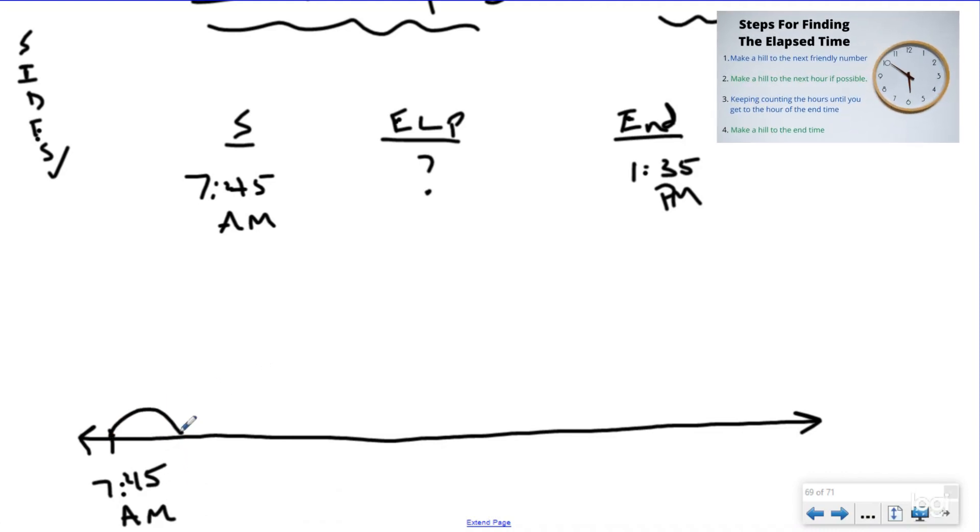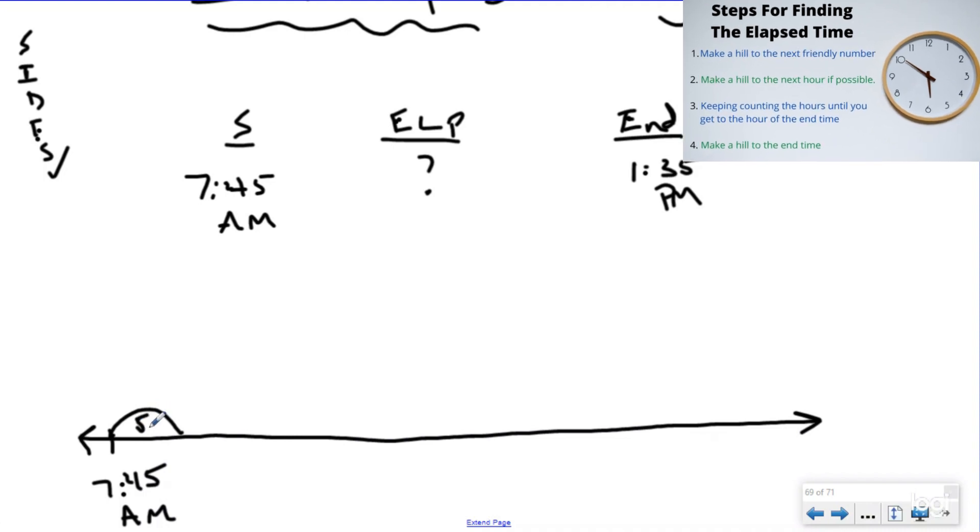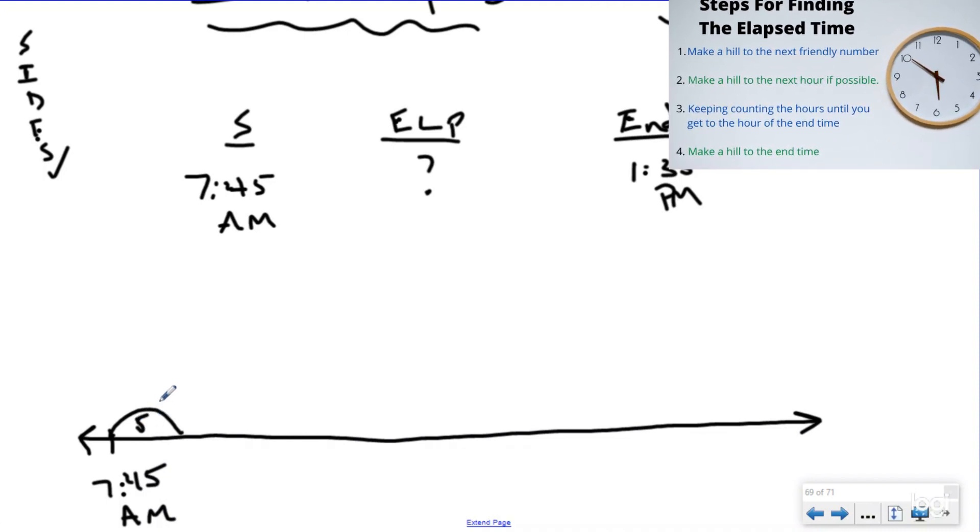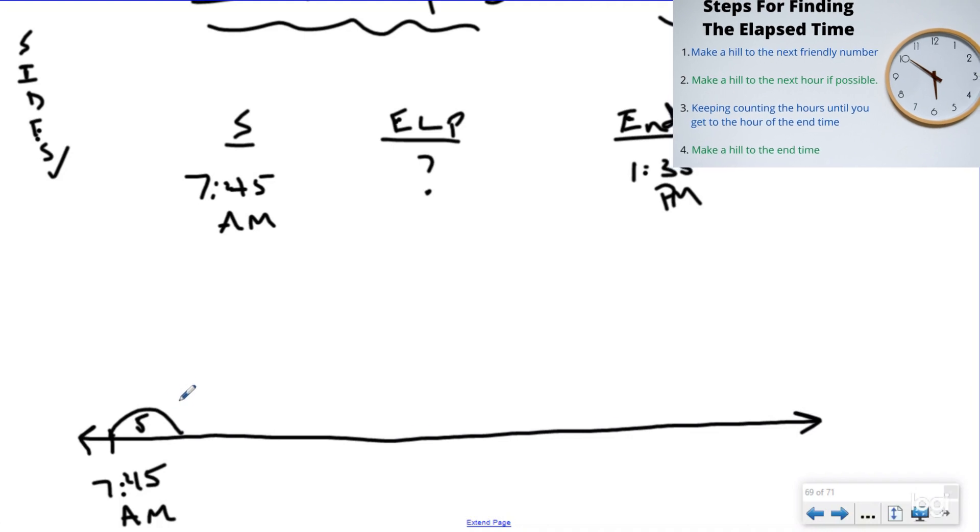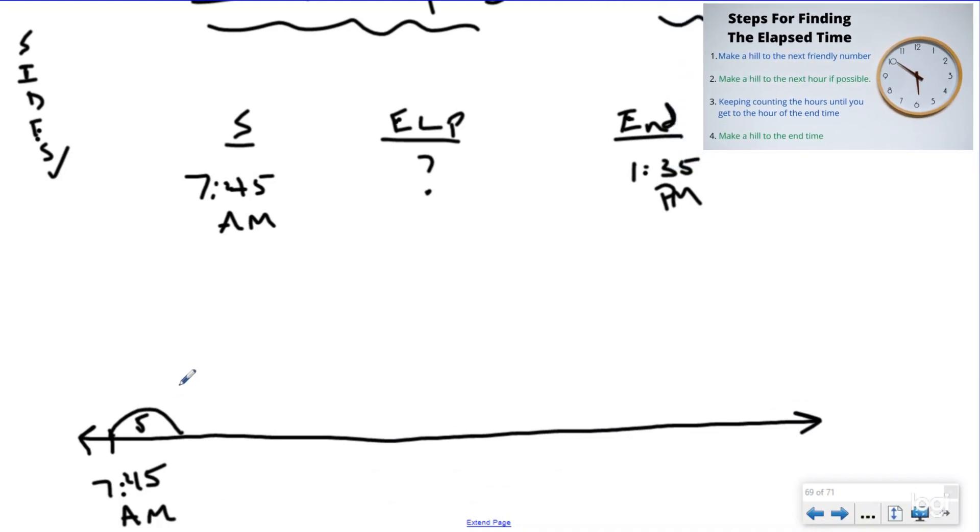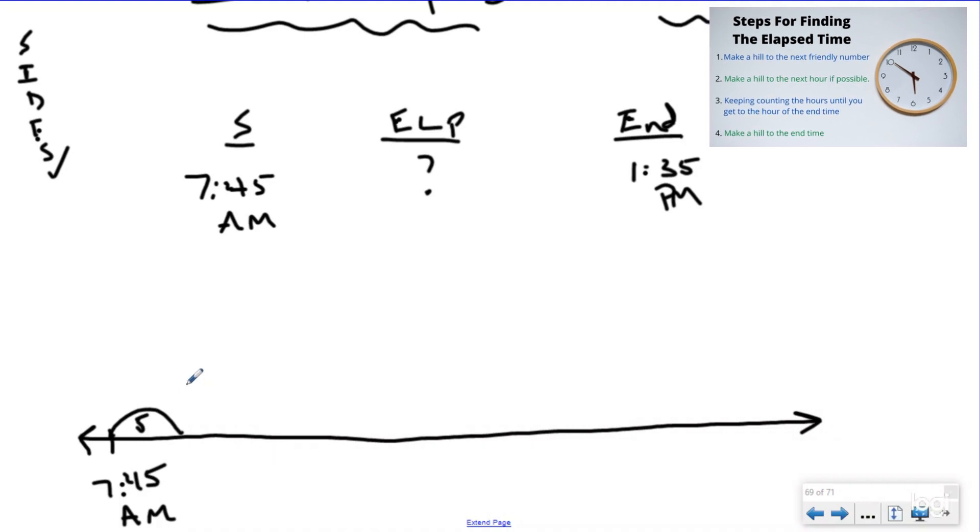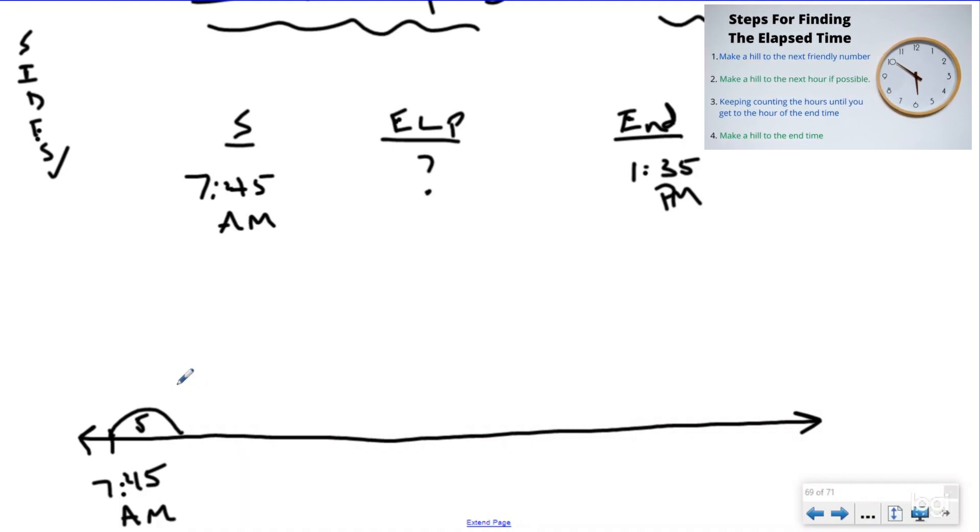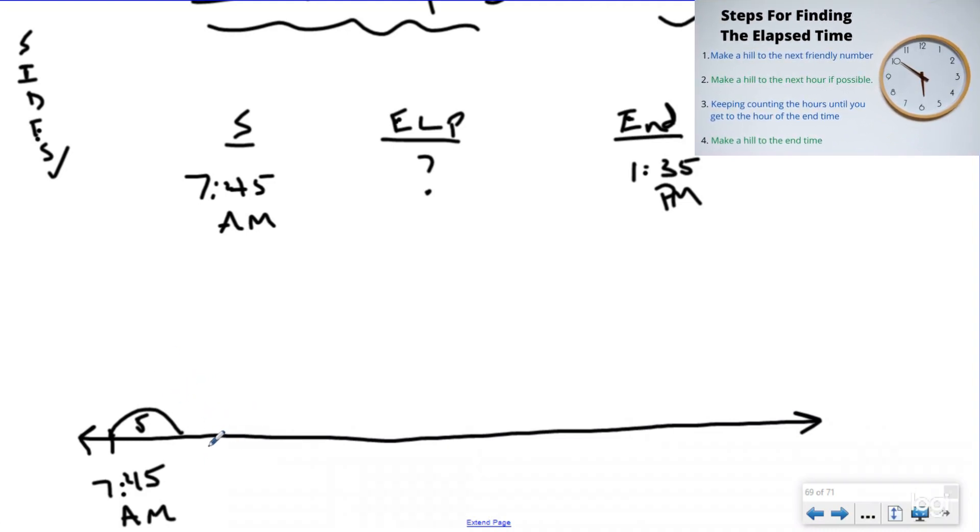And I want to get to my friendly number. So the first thing I'm going to do is I'm going to take a five-minute hill. Now, you might know 15 gets you to 8 o'clock, and you can do that too. You might not do your timeline the exact same way I did it, and that's okay as long as you got it right, you used the strategy to show you understood what was happening, and you feel comfortable with the hills that you used. If I take a five-minute hill, that's going to put me at 7:50. Which means I'm going to take a 10-minute hill now, and I'm going to go to 8 o'clock. Now, I'm going to stop there because I forgot to write it down. So I had five minutes, and then I had 10 minutes.